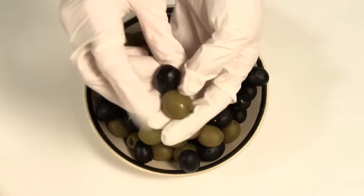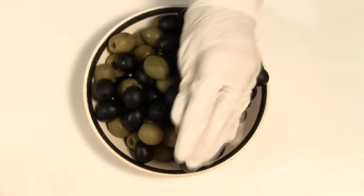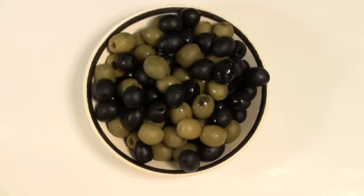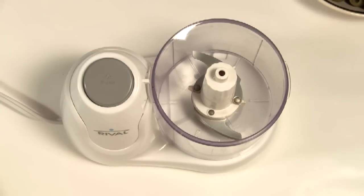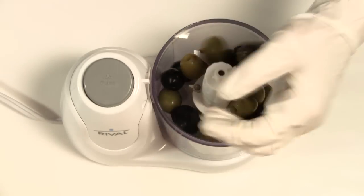Here we have 24 ounces of washed and pitted olives, green and black variety. The third step in the process is to grind them into a pulp. In the processing plant, this is done with large stone wheels or steel drums, but we'll use a food grinder.